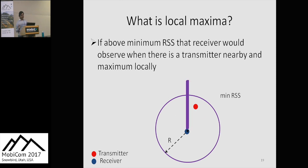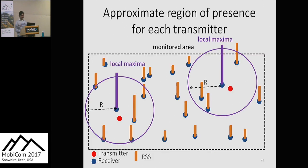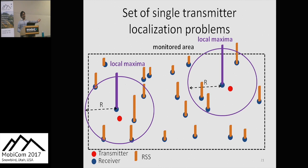We ask: for any possible location of the transmitter inside this circle, what is the minimum RSS that this receiver would observe? We note down the minimum RSS, go back to the spatial RSS map, and call an RSS measurement a local maxima if it is above this minimum value and higher than its locally neighboring measurements. For each local maxima, we can say with high certainty that there must be a transmitter around it within radius R. So we have boiled down the problem of multi-source localization to a set of single-source localization problems.